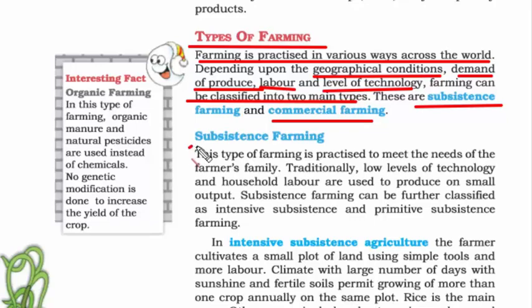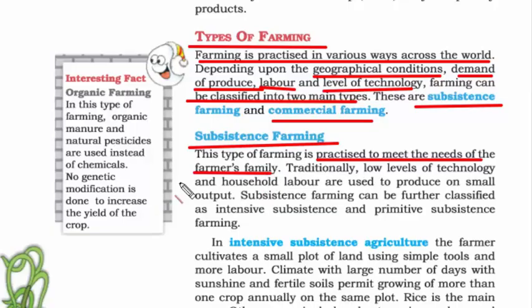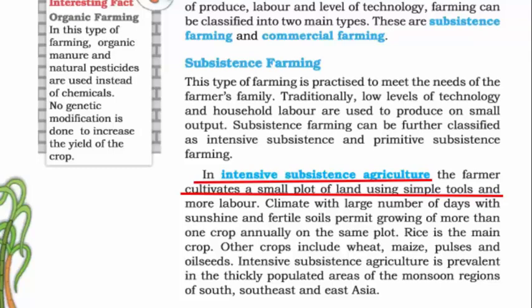Subsistence farming is where minimum resources are used and it is practiced to meet the needs of the farmer's family — essentially private farming. Imagine you have some land in your backyard and whatever you produce you only use to feed your family members — that's subsistence farming. It is further divided into two categories: intensive subsistence and primitive subsistence. Intensive subsistence agriculture is where farmers use their small land holdings to produce enough for local consumption while the remaining produce is used for exchange against other goods, using very simple tools.